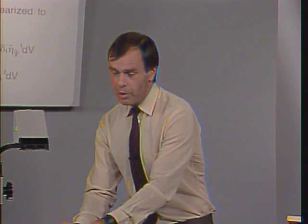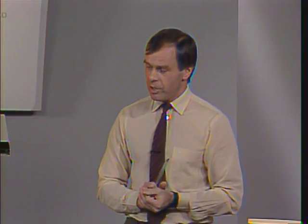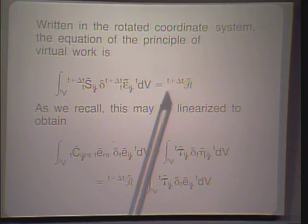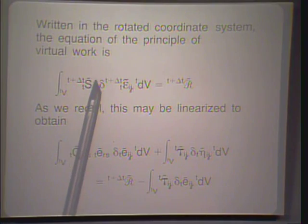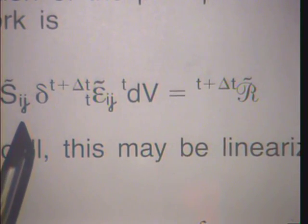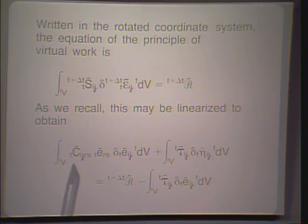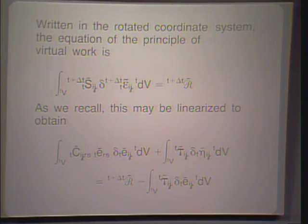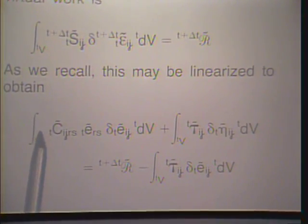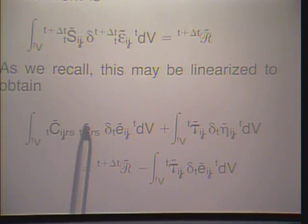We look back to our continuum mechanics equations developed in earlier lectures. Here we have the basic continuum mechanics equation — the principle of virtual work written for the updated Lagrangian formulation in the curled coordinate frame. This was the starting point for all equations in the updated Lagrangian formulation. The linearization resulted in this equation, which we discussed at length, except previously without the curl notation since we were working in the uncurled x1, x2, x3 frame.